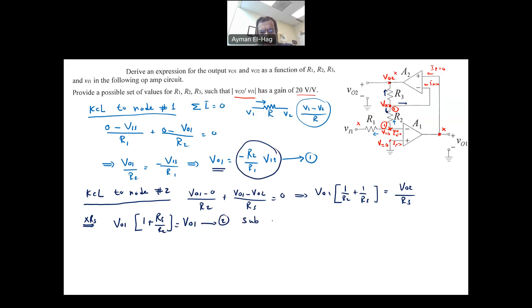But V01 actually is basically equal to this. This is our equation 2. So I will substitute 1 in 2. So I will just take this out. So we'll have minus R2 over R1 times V input 1 times 1 plus R3 over R2, and this is equal to V02. This is V02.